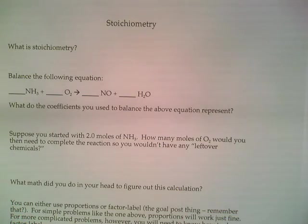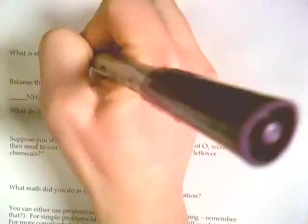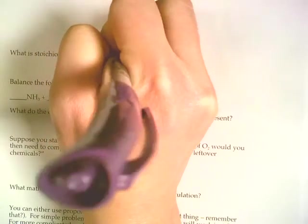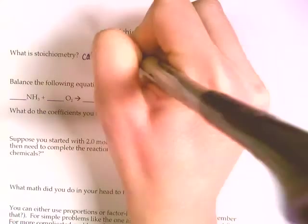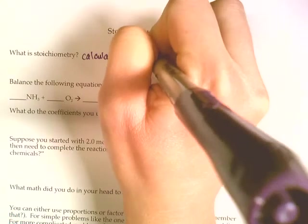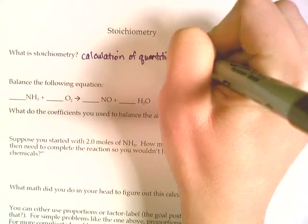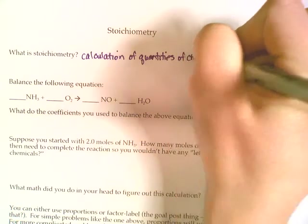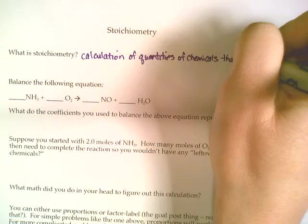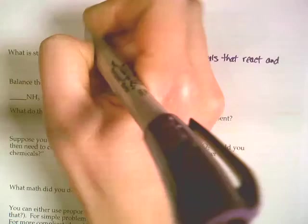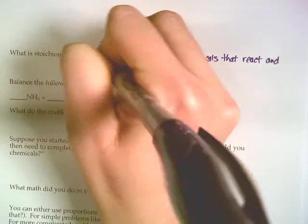Today we're going to be looking at something called stoichiometry, or stoic for short. What stoichiometry is, is basically the calculation of quantities of chemicals that react and form during a chemical reaction.